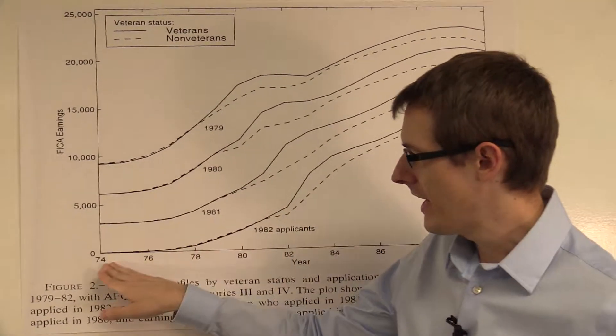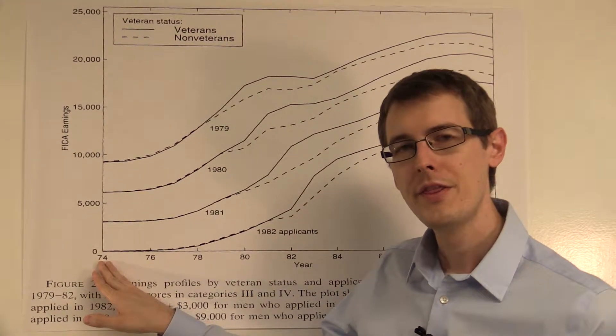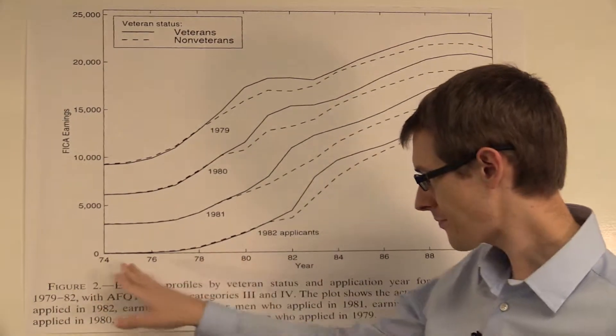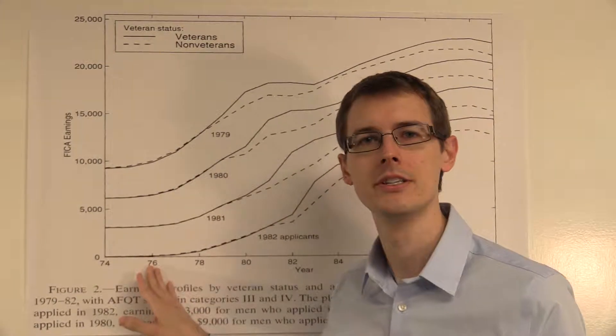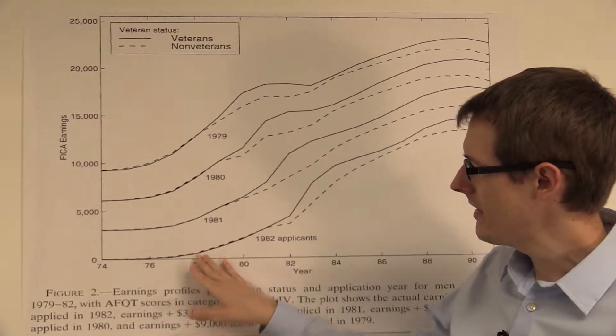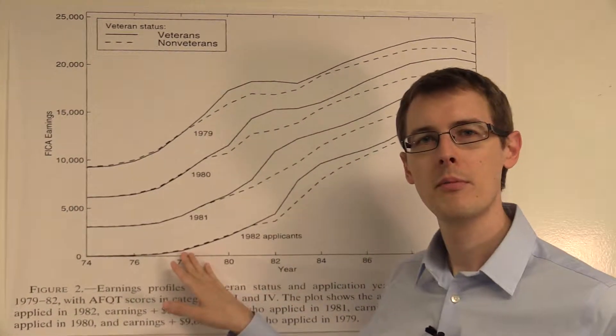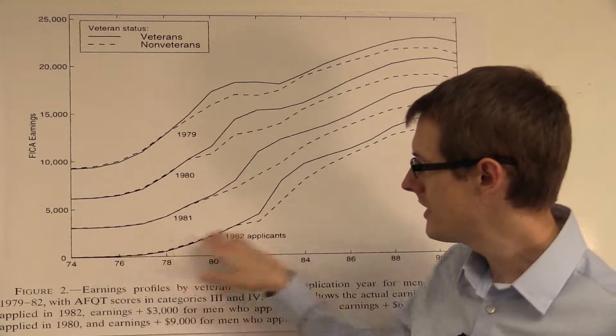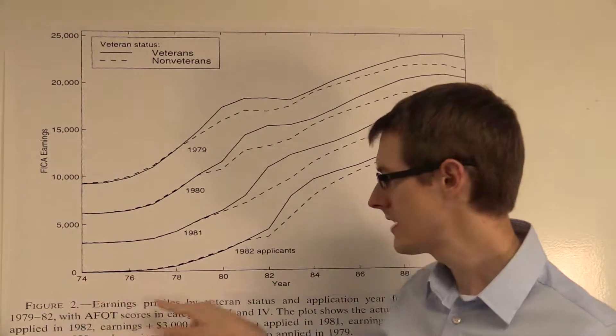Here we see that in 1974, they earned zero dollars. Well, that's probably because they were kids in 1974. In 1976, they also earned zero dollars. In 1978, they started to earn a little bit more money. And in 1980, 1982, their earnings, which is measured on this axis, started to increase.